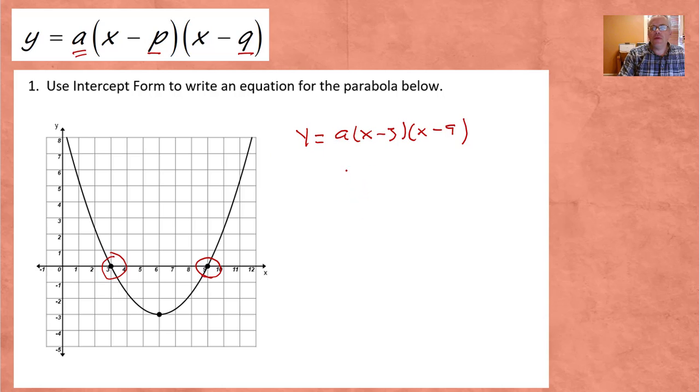The only thing we have left is to find the value of A, and we're going to use a trick we've used many different times. We're going to take a point from the parabola. It could be the vertex, but it could be any other point, and use it to find the value of A. So let's use the vertex here. That's a nice point for us. That's 6, negative 3. So we're going to use 6, negative 3, which means we're going to put 6 in for X, negative 3 for Y, and solve what we get for A.